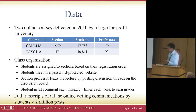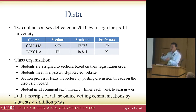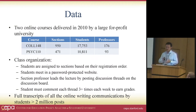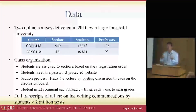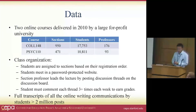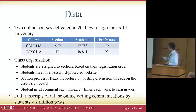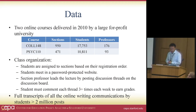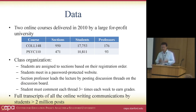How is the class organized? Students are assigned to class sections based on their registration order — the timing of their registration — which allows us to overcome selection bias. Students meet in a password-protected website, a closed forum for discussion. Section professors lead the lecture by posting the first question and motivating students to discuss the topic. Students must comment on each thread more than three times each week to earn their grades, so online discussion is a required element. The data we have is the full transcripts of all online written communications by students — more than two million posts in total.